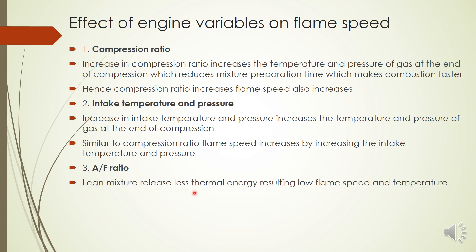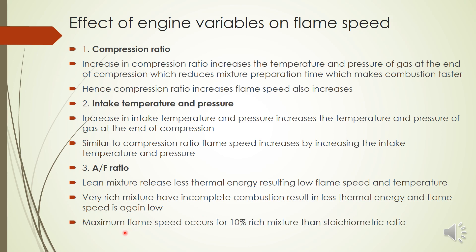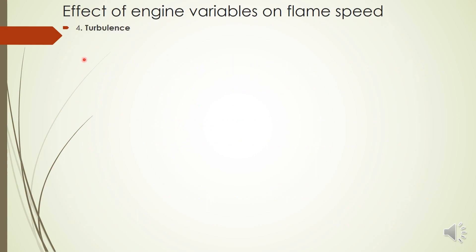Regarding air–fuel ratio: a lean mixture (more air, less fuel than stoichiometric) results in less thermal energy release, giving low flame speed and temperature. A very rich mixture results in incomplete combustion and again less thermal energy, so flame speed is low. Therefore, flame speed is maximum for a mixture about 10% richer than the stoichiometric ratio.